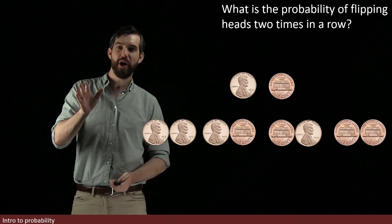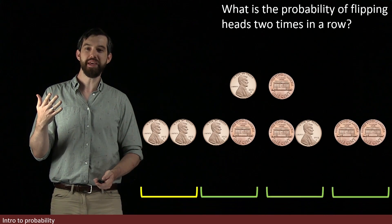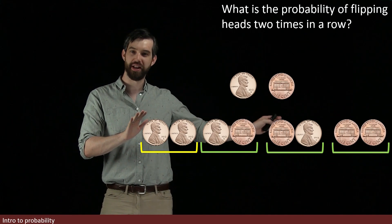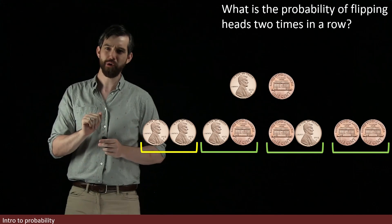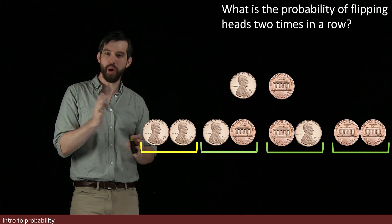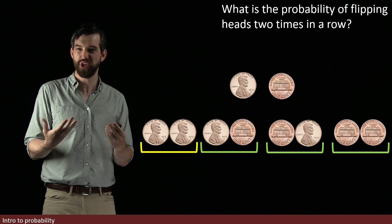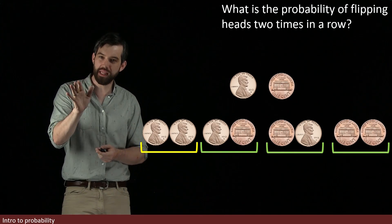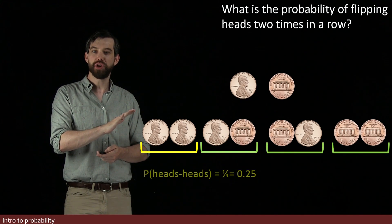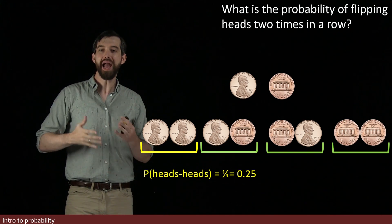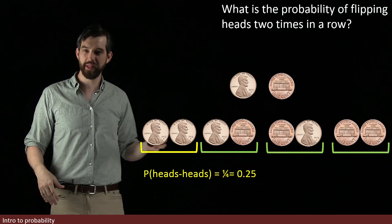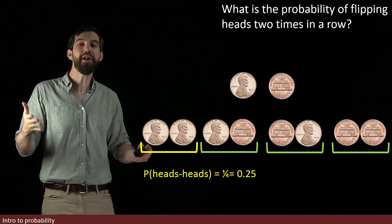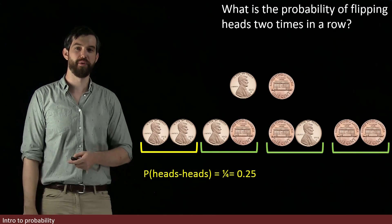After two flips, there are four different cases: heads-heads, heads-tails, tails-heads, and tails-tails. Since all four cases are equally likely — this is not a weighted coin — the probability of getting two heads in a row is one quarter. There are four possibilities total, and only one of them is the correct one I'm interested in, so that's one out of four, or 25%.